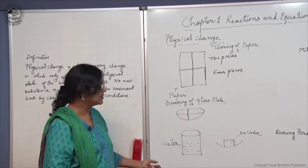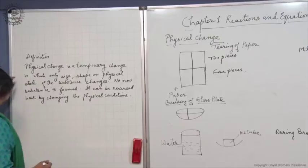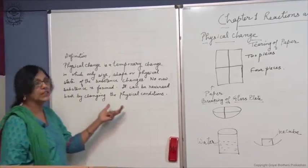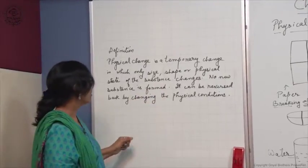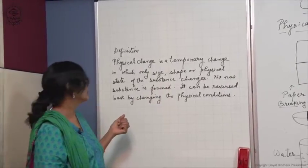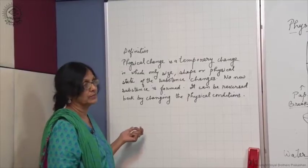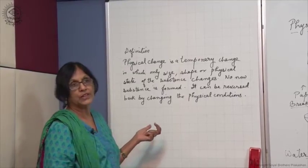Now we can define physical change. Physical change is a temporary change in which only size, shape or physical state of the substance changes. No new substance is formed.